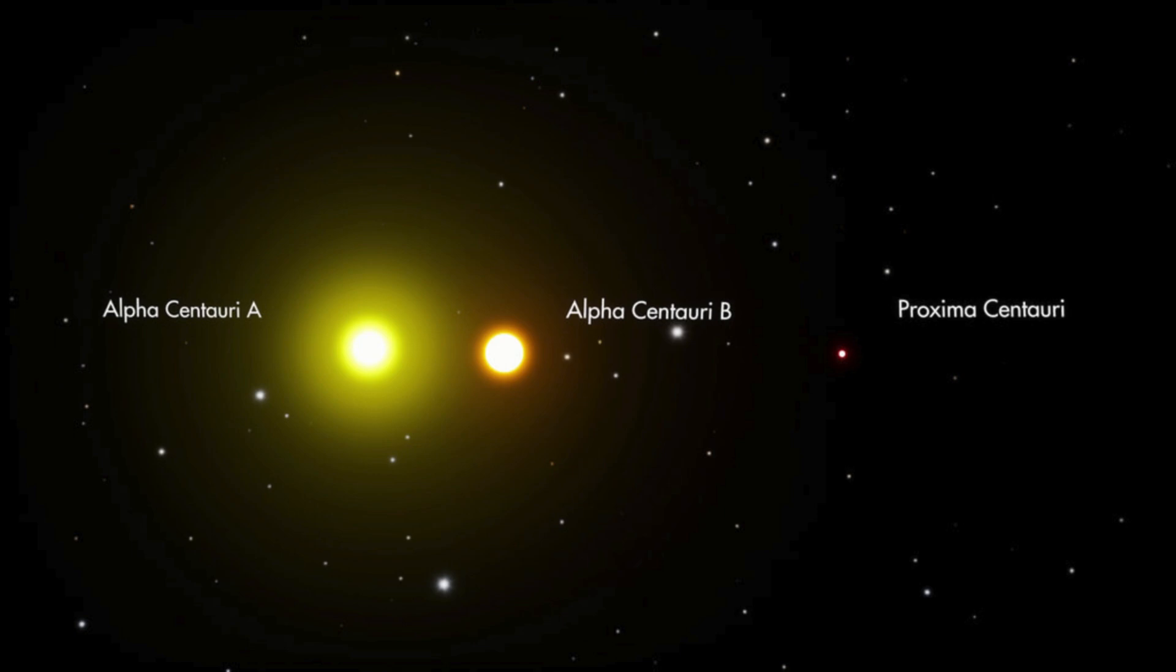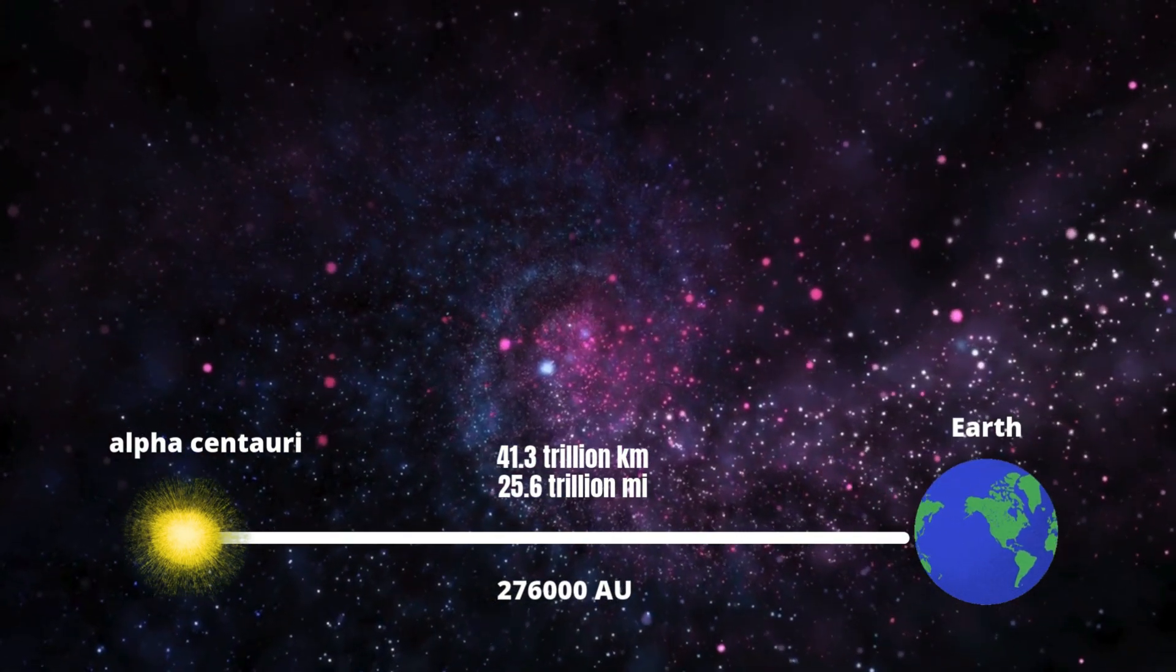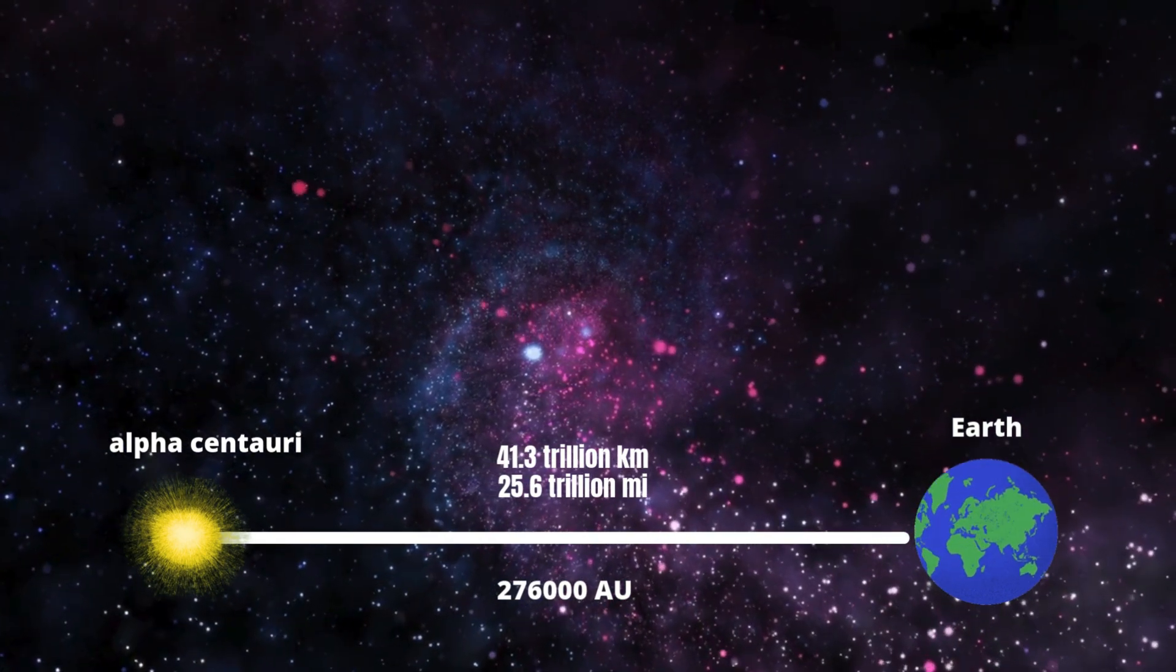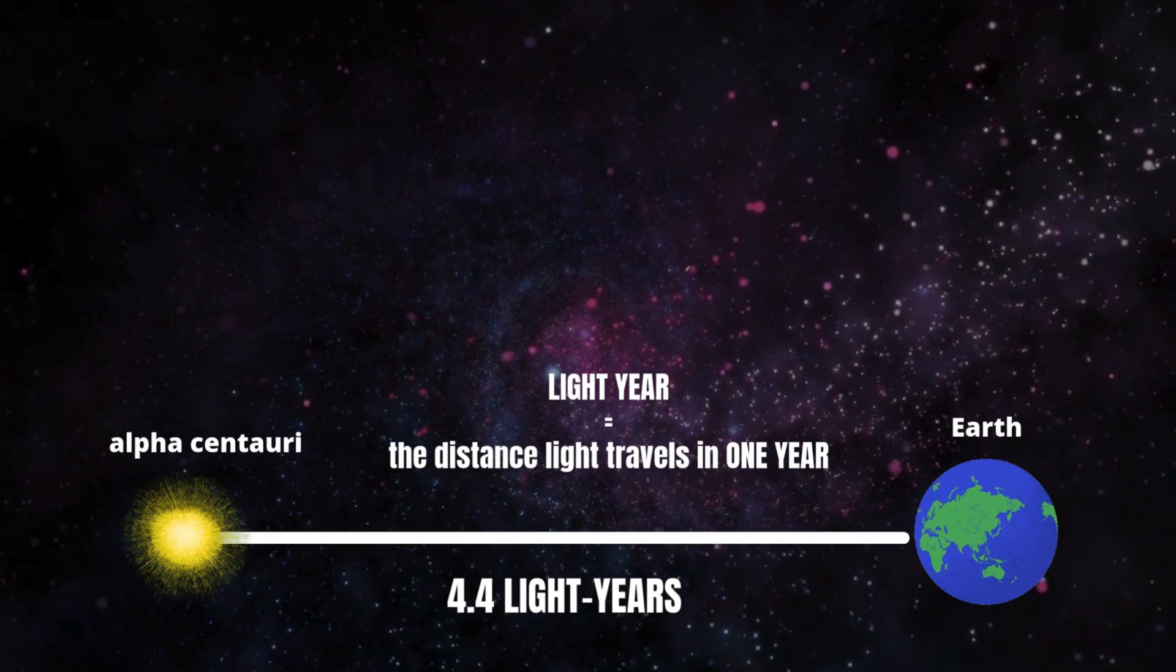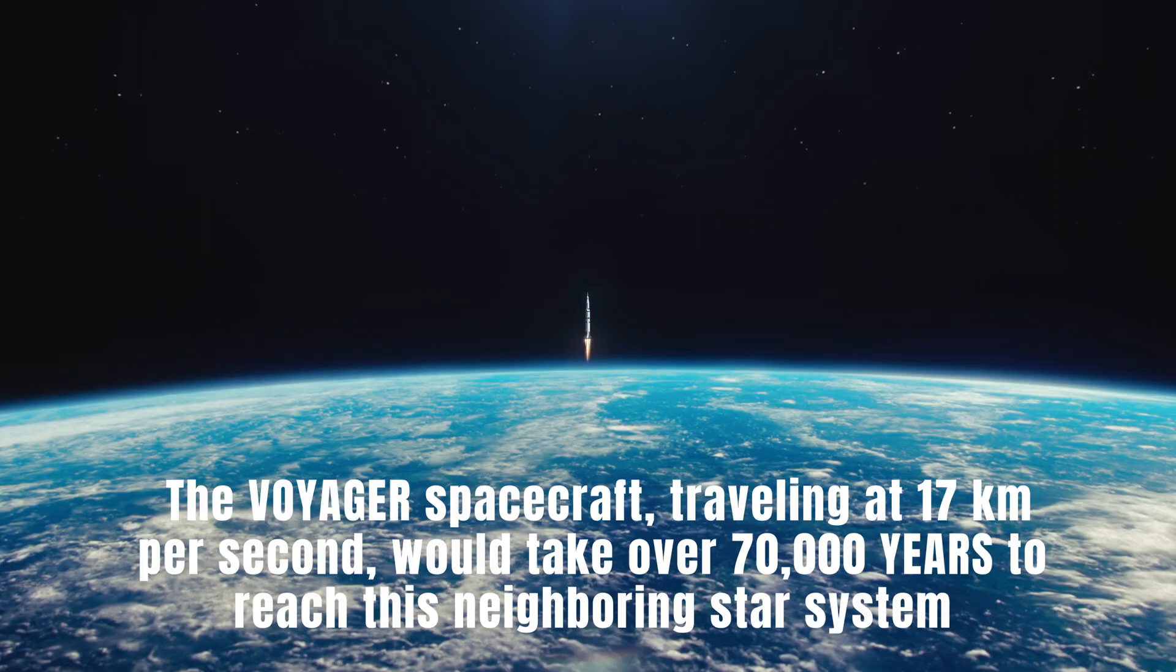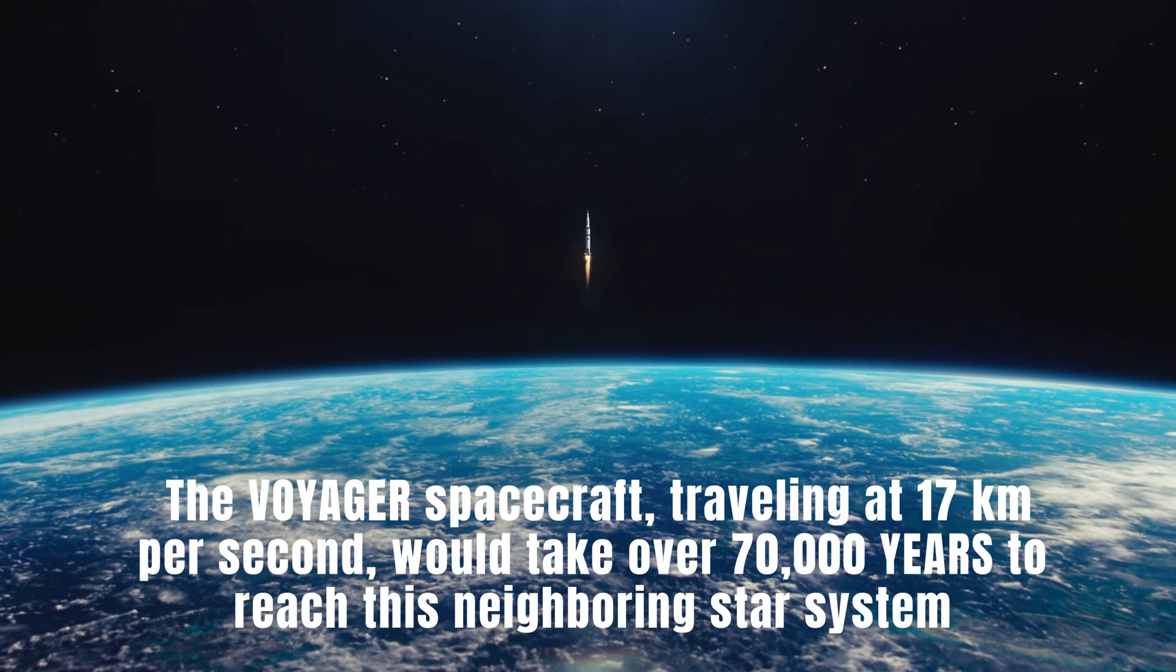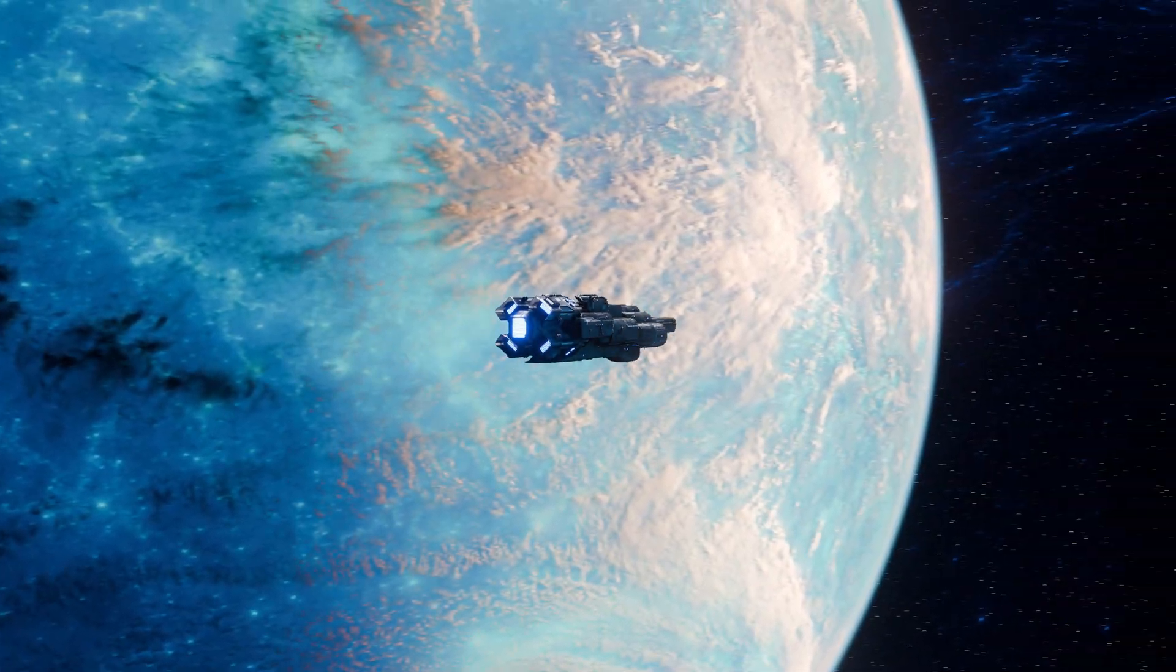As we leave the solar system behind, our next destination is Alpha Centauri, the closest star system to our Sun, located approximately 41.3 trillion kilometers away. This distance is equivalent to over 276,000 astronomical units, a scale so immense that the astronomical unit becomes impractical. Instead, astronomers rely on the light-year, the distance light travels in one year. Alpha Centauri is about 4.4 light-years away from us. Given our current space travel technology, reaching Alpha Centauri remains an almost unimaginable challenge. For instance, the Voyager spacecraft, traveling at 17 kilometers per second, would take over 70,000 years to reach this neighboring star system.